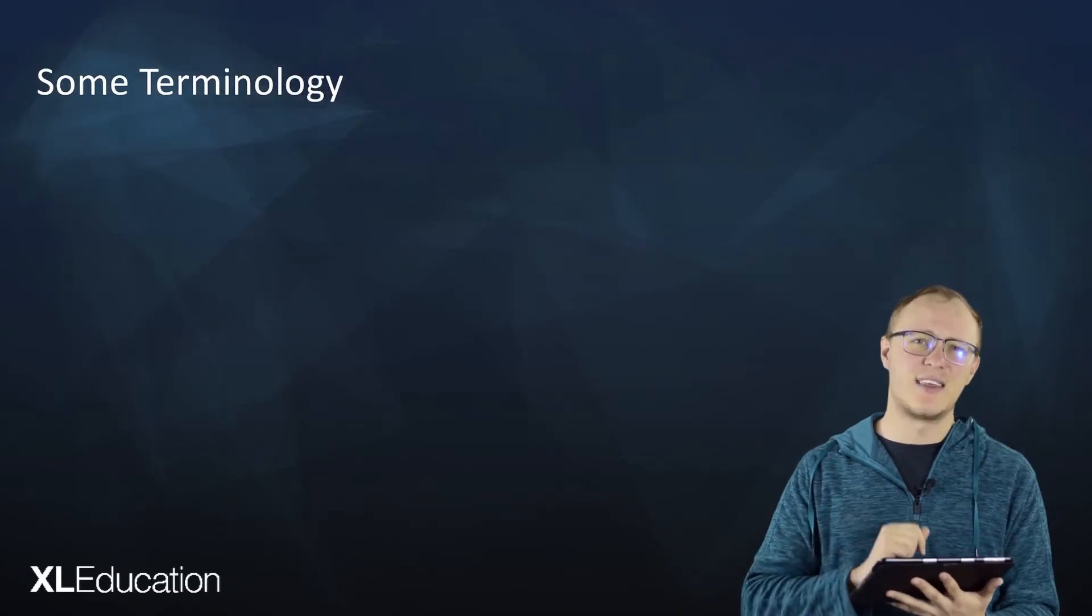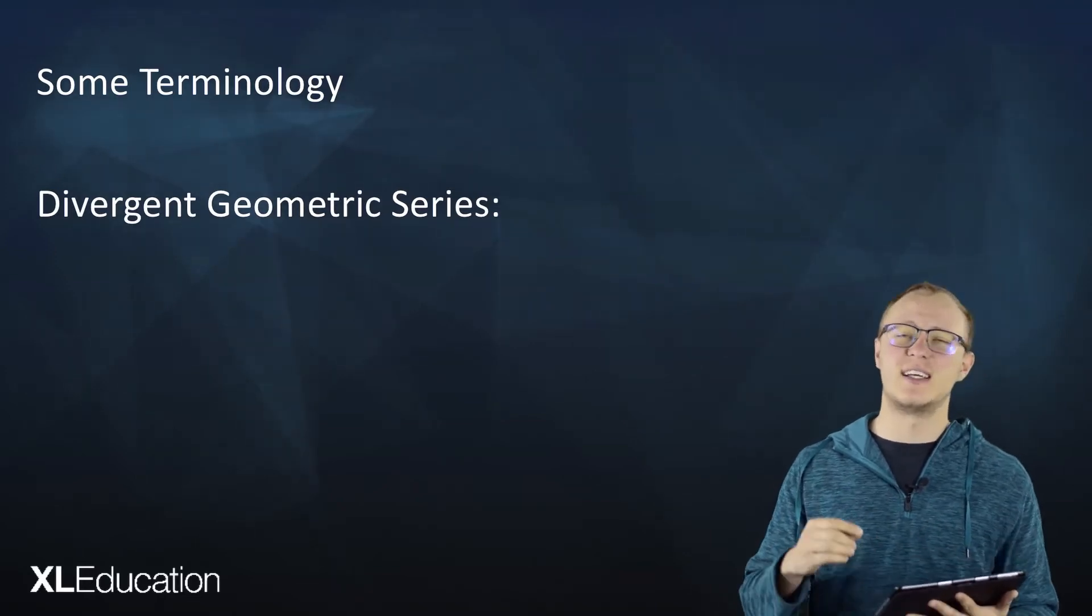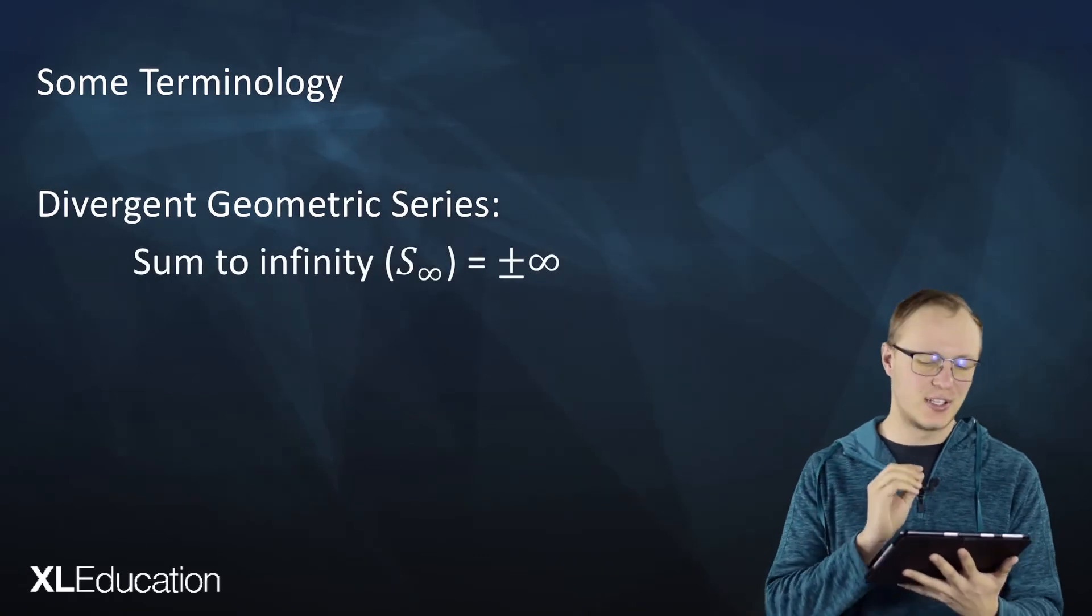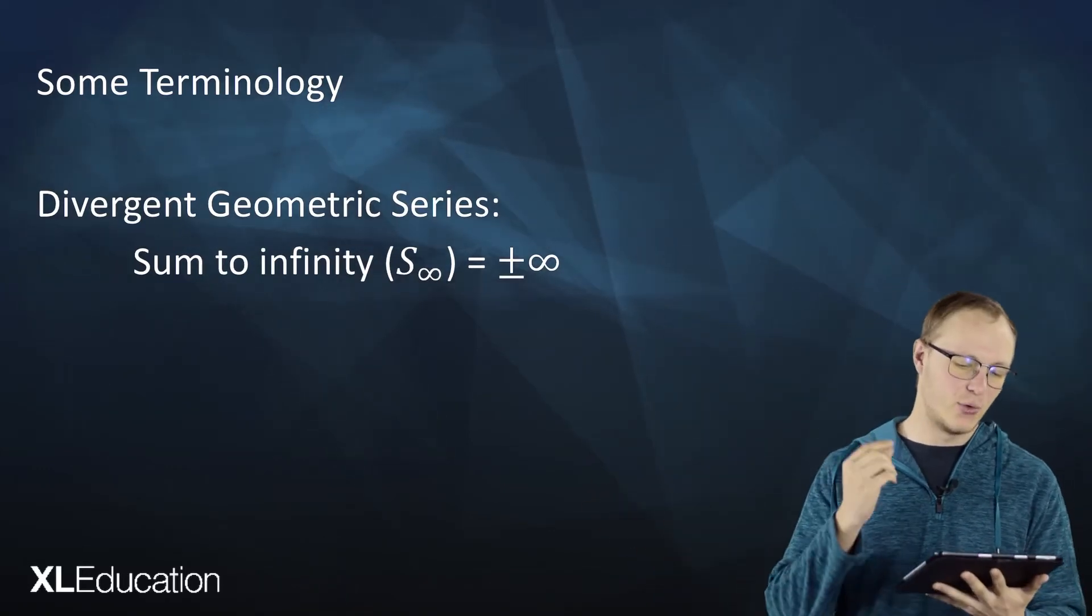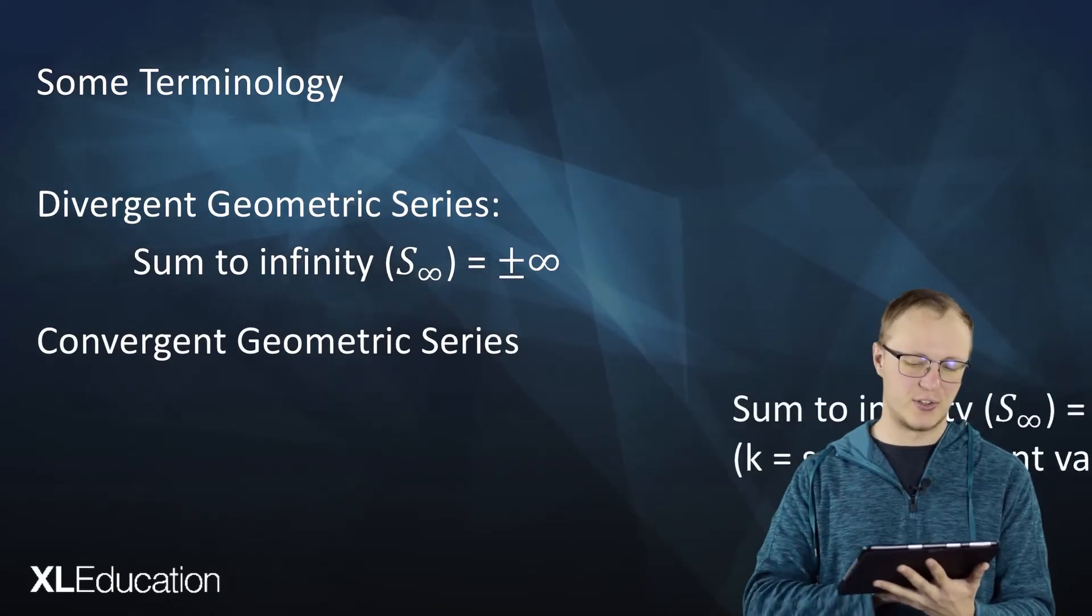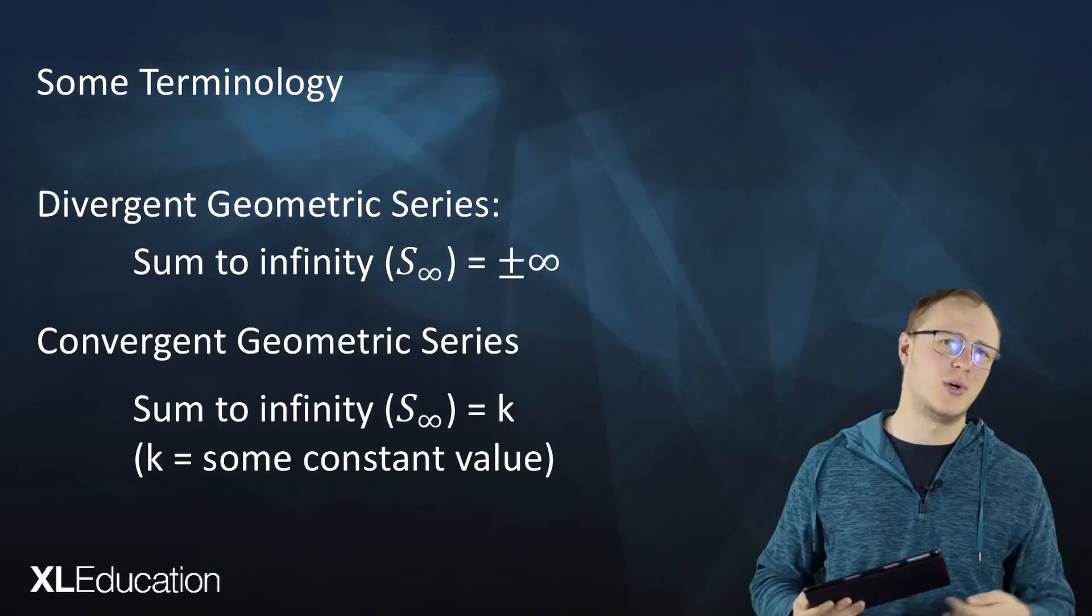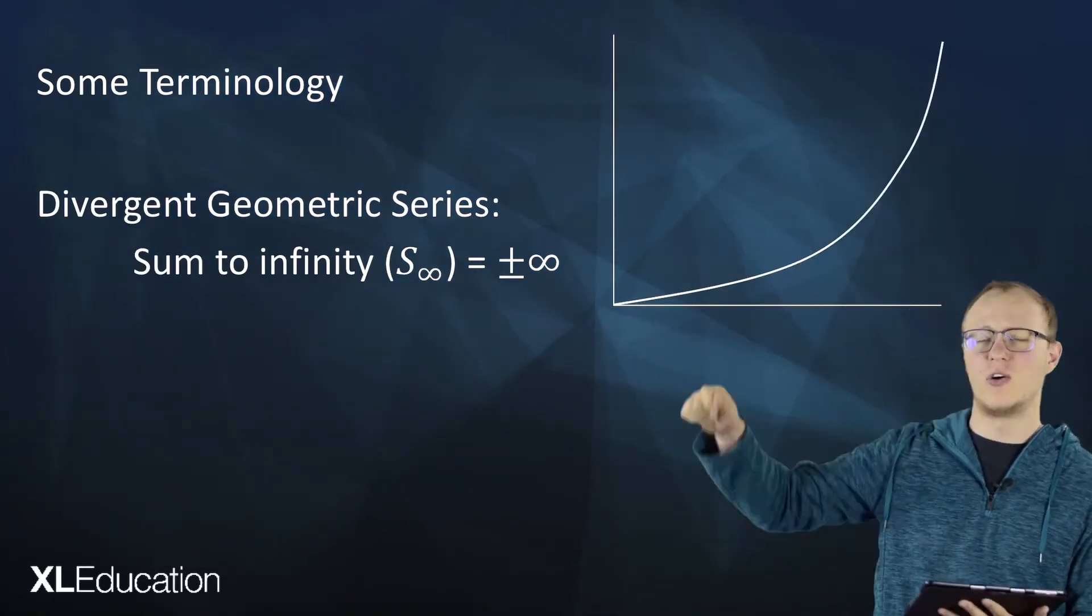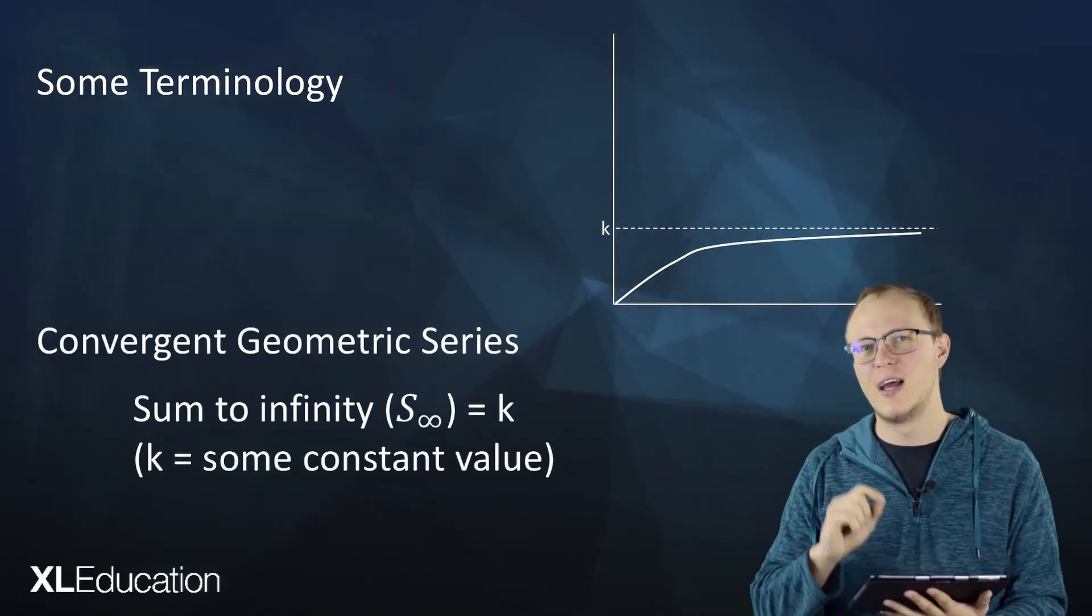Let's think about it in terms of some terminology. We can label a geometric series as either being divergent or convergent. For a divergent geometric series, the sum to infinity is positive or negative infinity. For a convergent geometric series, if we add everything up, it actually adds up to a constant value like that previous example we just did. If you put it on a graph, divergent is just going to go on up forever, but for convergent, it's actually going to approach a value.